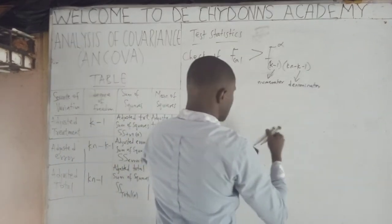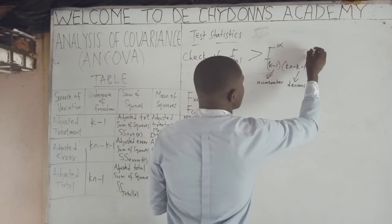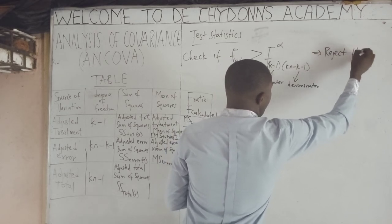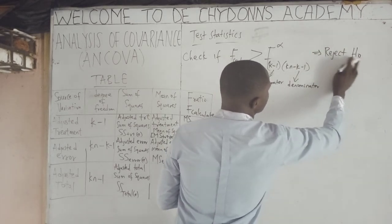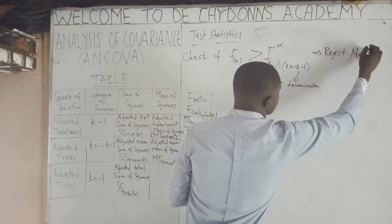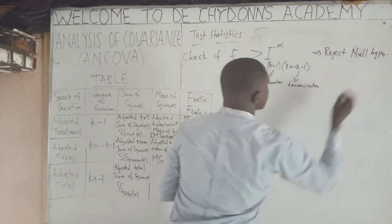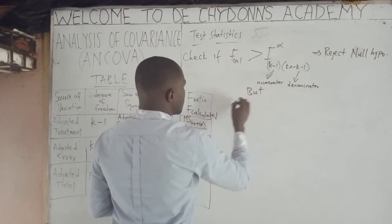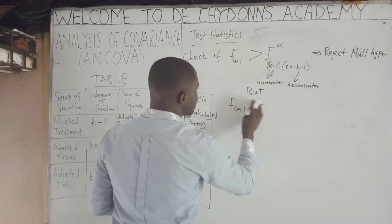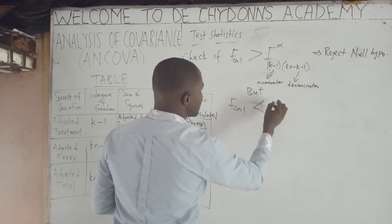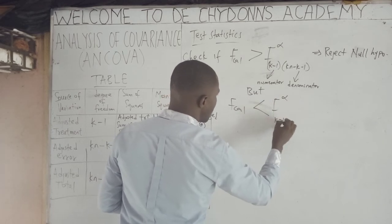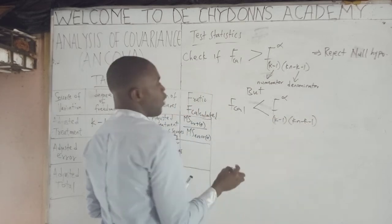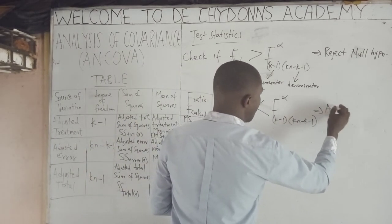If F-calculated is greater than F-alpha, you conclude by rejecting the null hypothesis. But if F-calculated is less than F-alpha with the corresponding degrees of freedom, you accept the null hypothesis.